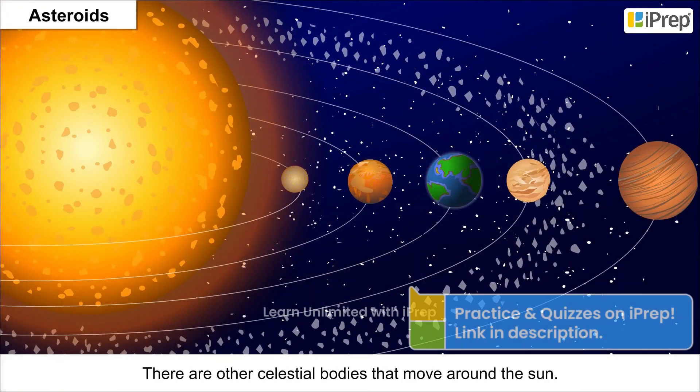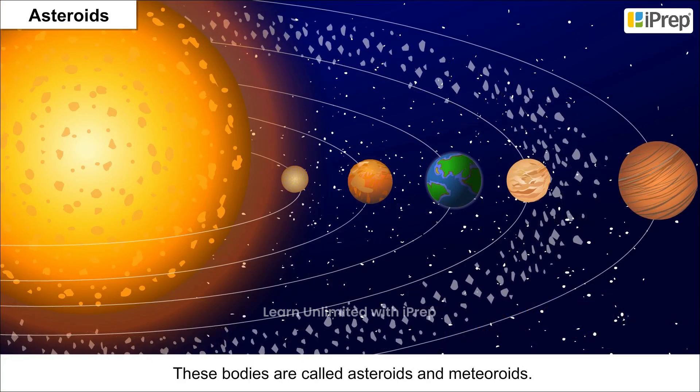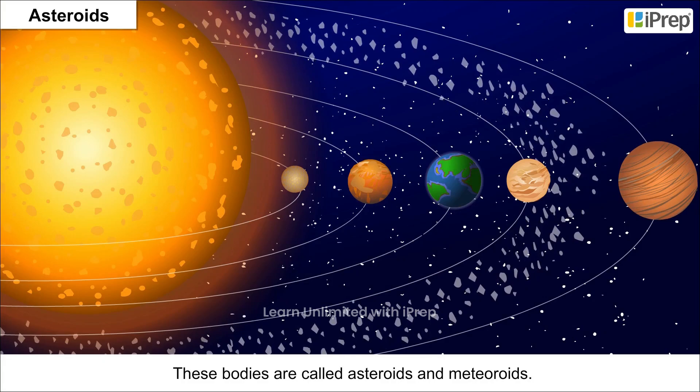There are other celestial bodies that move around the Sun. These bodies are called asteroids and meteoroids.